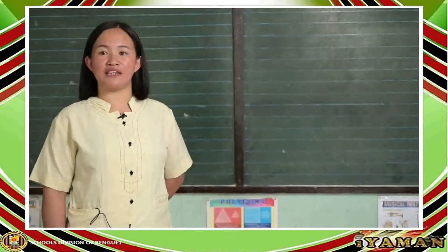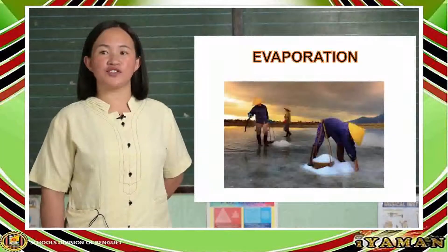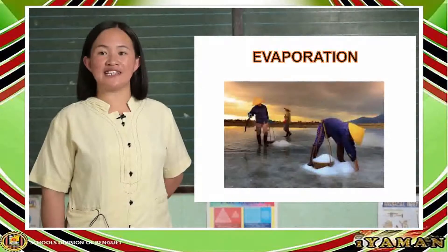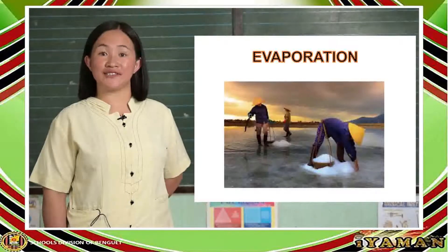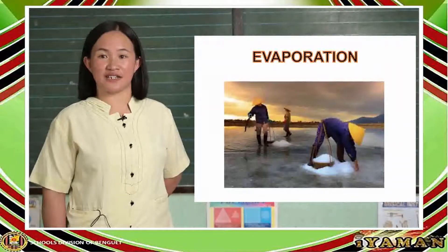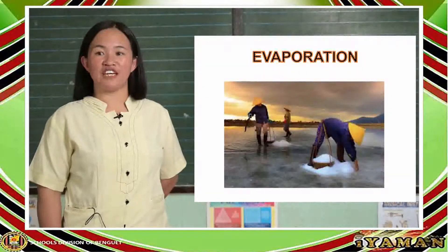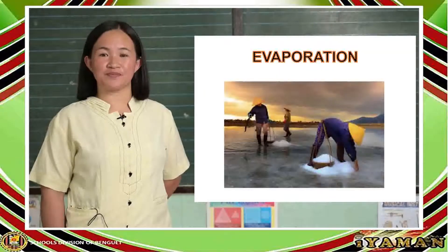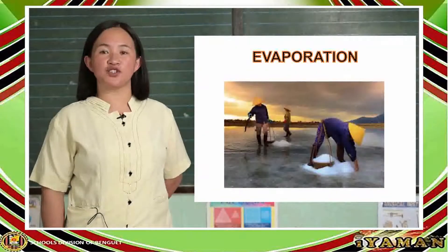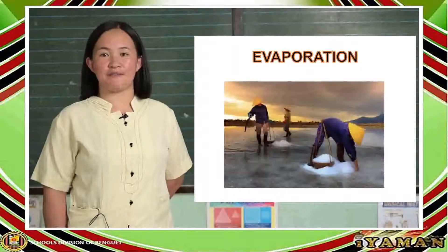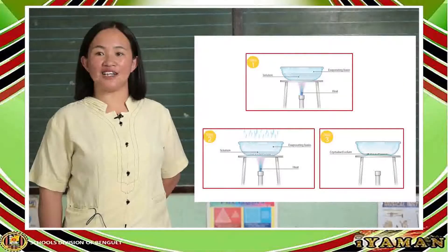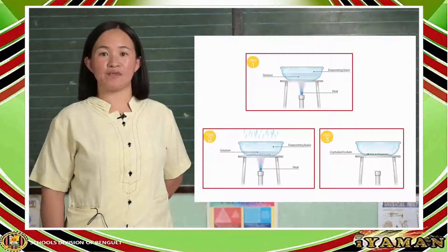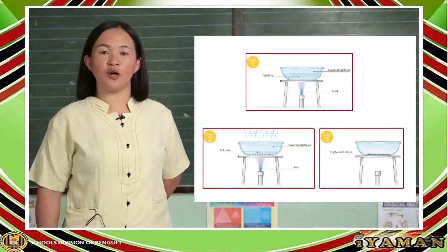The next technique of separating mixture is evaporation. This technique is commonly used to separate solid components of solution by making the liquid component evaporate. As the mixture is heated, the volatile substance evaporates at a temperature that is lower than the boiling point of water. The heated liquid absorbs the heat and changes to vapor. The non-volatile substance stays at the container. Evaporation is used to produce salt by evaporating seawater under the sun. Let us study how to separate components of solution using evaporation. First step, put the solution in a pan and place it on top of a heat source. Second step, let it boil until all the water evaporates, leaving the solid particles in the pan. Third, turn off the source of heat when only crystallized solute was left in the pan.